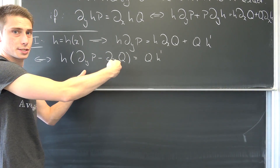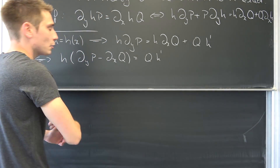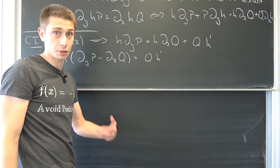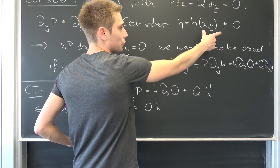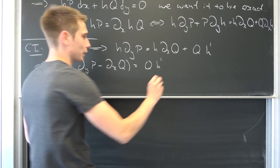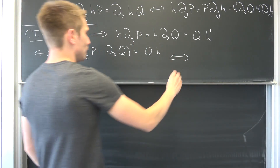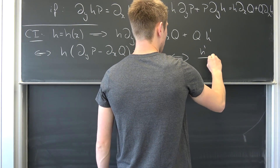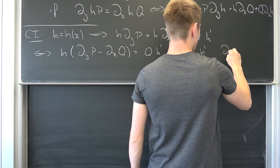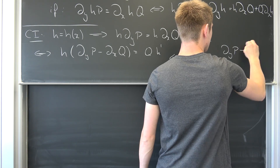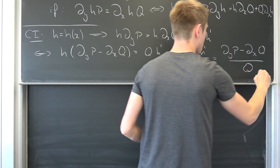And how can we solve such a simple differential equation? We are going to divide both sides by Q, under the condition that it's not equal to zero, and divide both sides by H — by our condition up here, it's not equal to zero. Meaning we are going to be left with H prime over H equals (del_y P minus del_x Q) over Q.